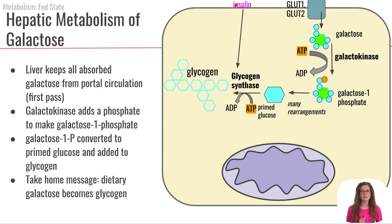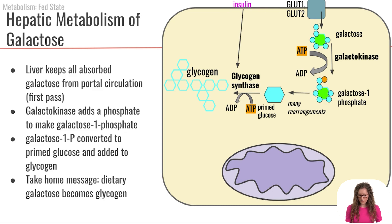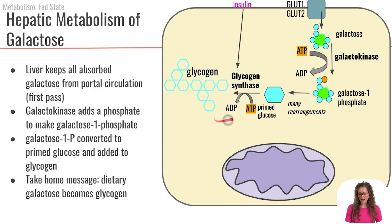This glycogenesis is stimulated by insulin, and of course insulin is present because we are in the fed state. So the overall take-home message is that the galactose we get from our diet goes to the liver and ultimately becomes glycogen. Galactose becomes glycogen.